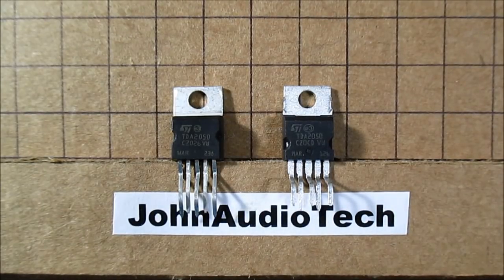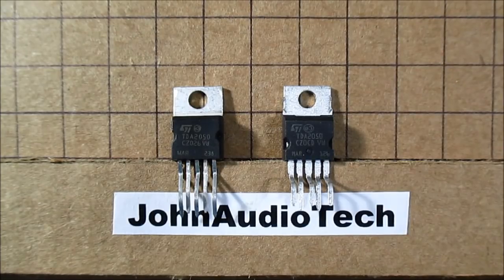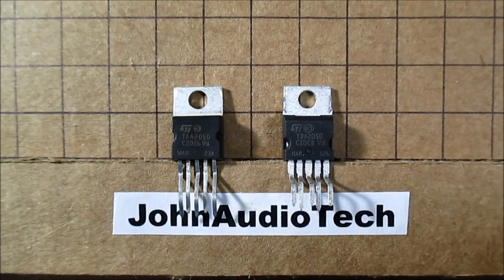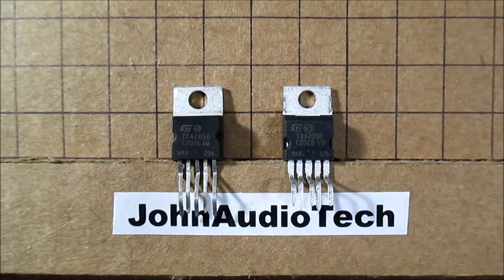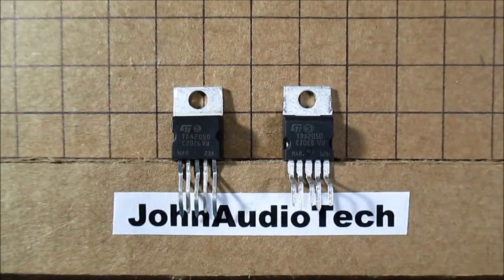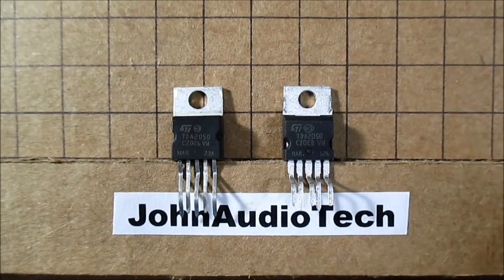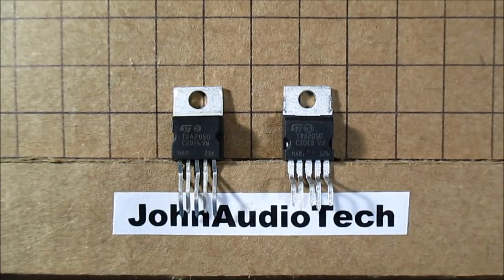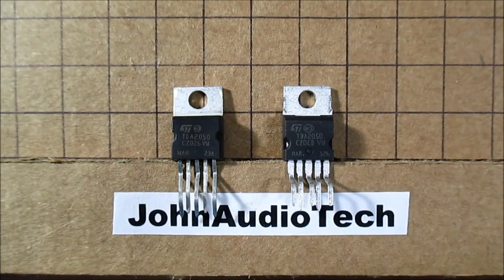That is to talk about authentic and counterfeit ICs. China is good at counterfeiting things. They counterfeit everything from clothes and handbags to other tools and products, down to electronics, capacitors, ICs, transistors. They just do it to make a quick buck.